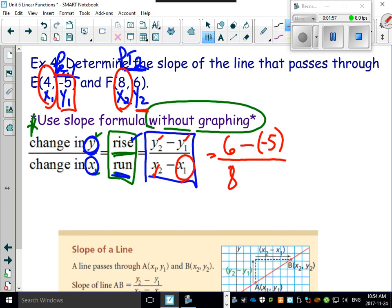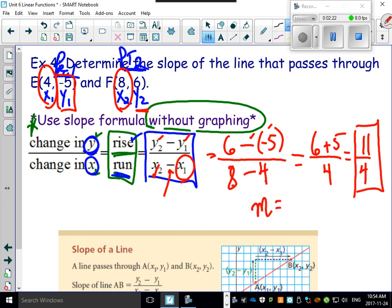According to the definition, you just subtract them out. So 6 minus minus makes it plus 5. 8 minus 4 is easy, that's just 4. 6 plus 5 is 11 over 4. There is your slope, and they actually give slope a symbol - they call it m. So your slope is 11 over 4.